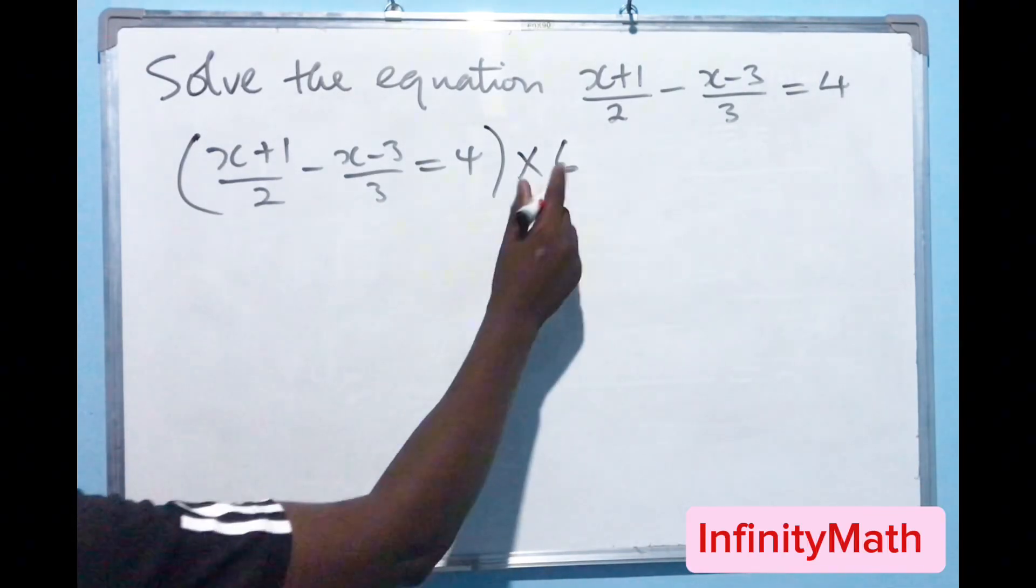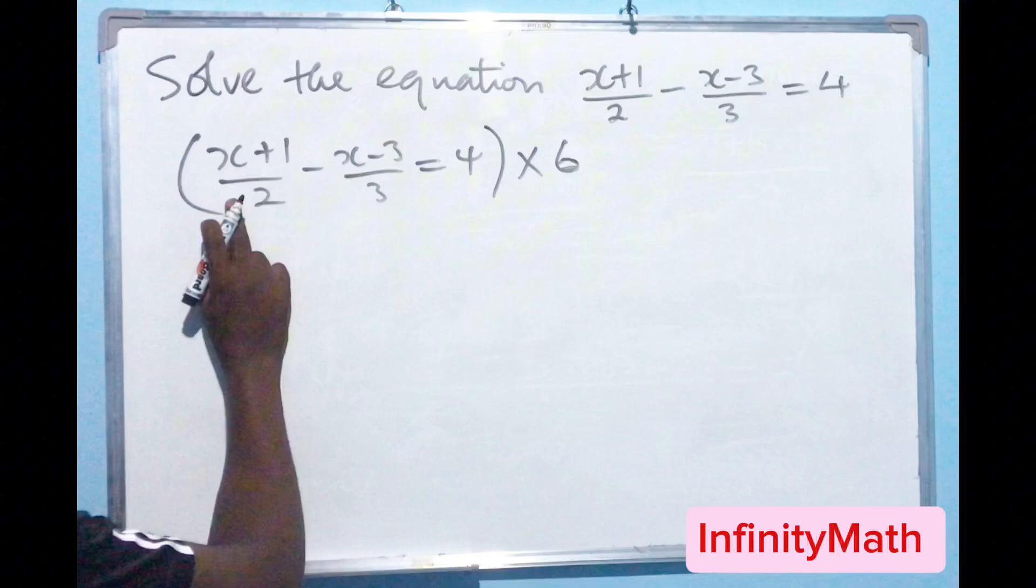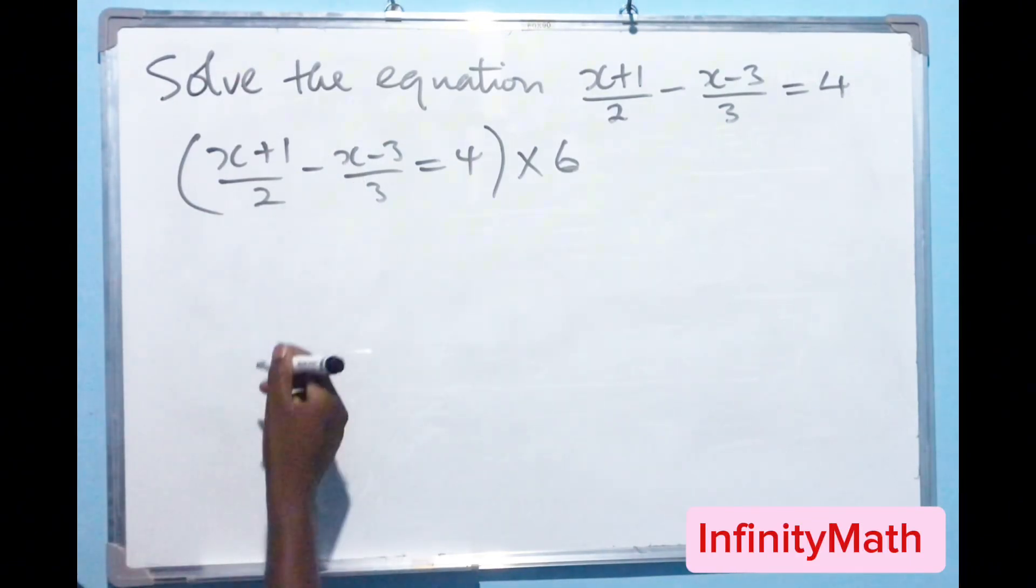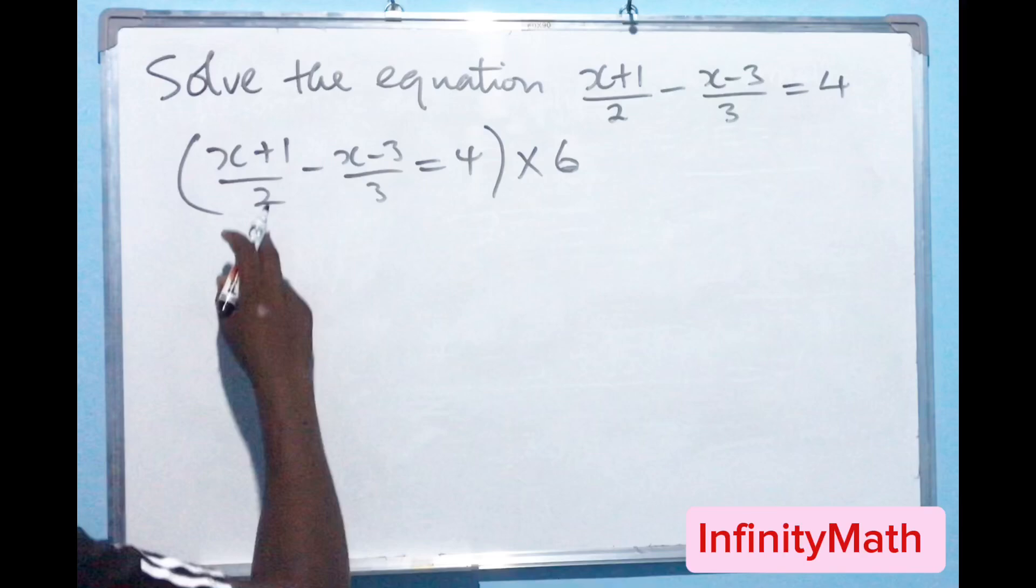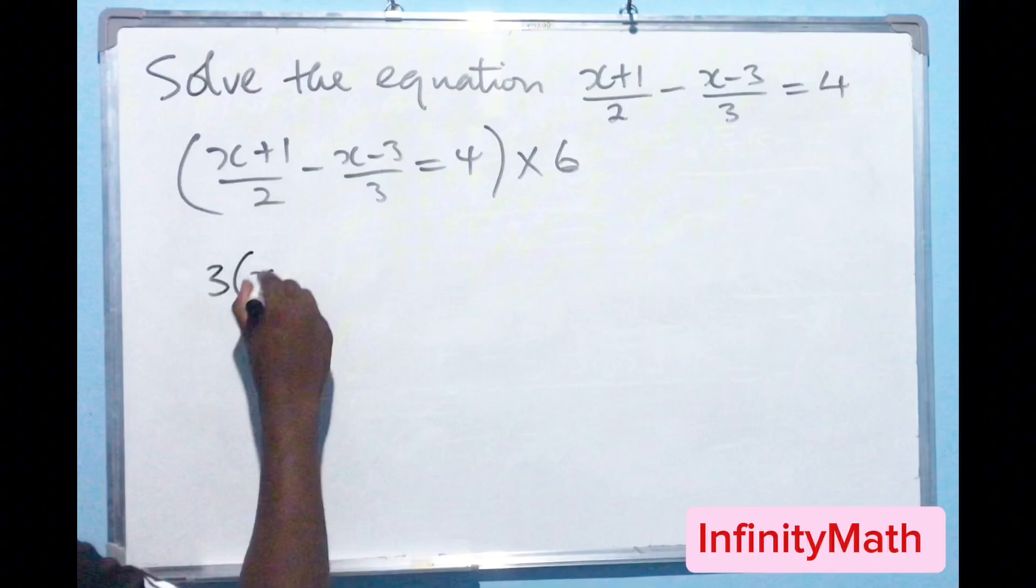If we multiply this 6 here multiplied by this fraction here, what we are going to do is this: we are going to say 2 into 6 goes in there 3 times. So we are going to multiply the thing with the numerator. So it's going to be 3 times x plus 1.